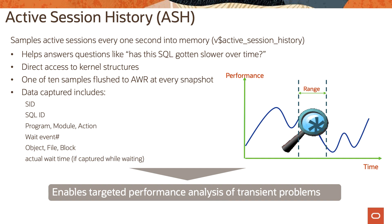Several dimensions are captured in Active Session History reports: SQL, SQL ID, program, module, and actions. The in-memory buffer uses V$ACTIVE_SESSION_HISTORY with a sampling interval of one second. For longer-term storage, there is the DBA_ACTIVE_SESSION_HISTORY table with a sampling interval of 10 seconds. The advantage of Active Session History is that every second we are capturing performance data, which helps with analytics. Active Session History is a system-wide record of database activity, and each row represents a second of active session time.